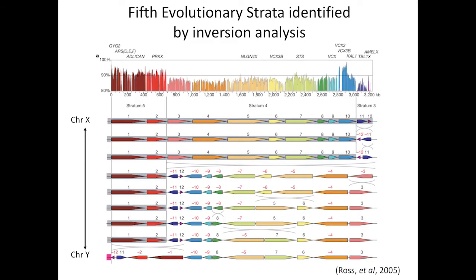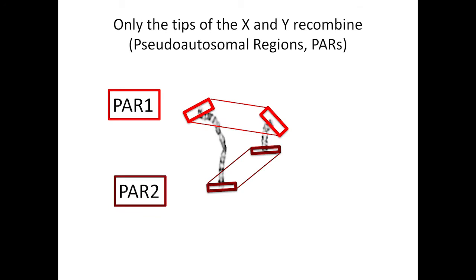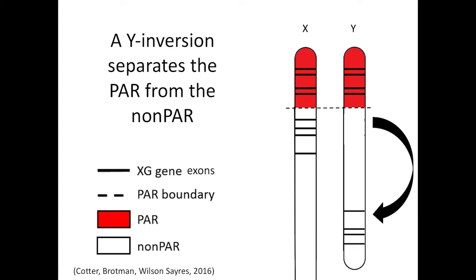In 2005, with sequencing of the human X and Y, looking at actual inversions, a fifth evolutionary stratum was identified. Work I did as a postdoc, looking at motifs enriched in different parts of the chromosome, proposed at least nine evolutionary strata. Our X and Y are actively evolving across species. Only the tips of the X and Y can recombine — pseudoautosomal region one, and humans uniquely have a second pseudoautosomal region. We tried using population genetics to observe where that boundary is, but using genetic diversity alone, we didn't see a strict boundary.